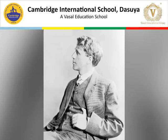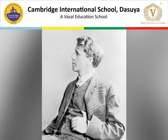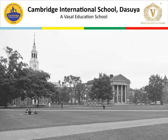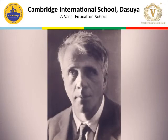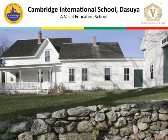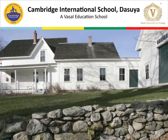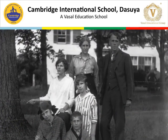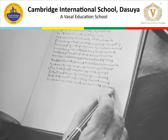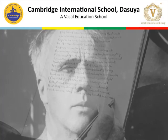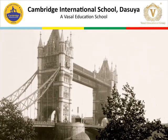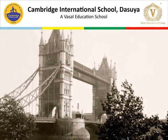Frost began writing poetry in high school, where he met his future wife, Eleanor White. He briefly attended Dartmouth, then went to Harvard in 1897, but left before graduating due to illness and his wife's pregnancy. After Harvard, Frost took up farming. During this time, he lost two children to influenza and wasn't a very good farmer. The farm did not thrive, but his work thrived. While Frost was able to get a few poems published, he was unable to get a book published. So in 1912, he sold his farm and took his family to live in England, hoping to find better luck with publishers.